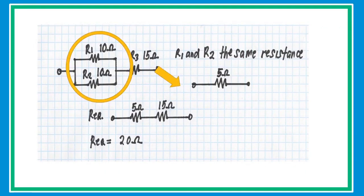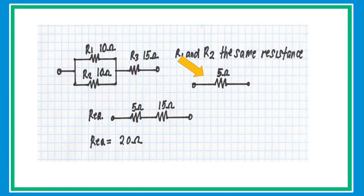Redraw the circuit and simplify. Add R3, which is 15 ohms, to the 5-ohm equivalent, giving a total equivalent resistance of 20 ohms.